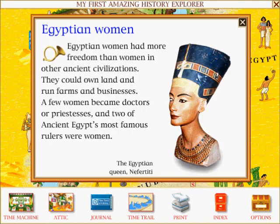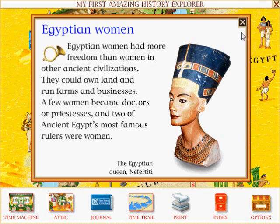Egyptian women had more freedom than women in other ancient civilizations. They could own land and run farms and businesses. A few women became doctors or priestesses. And two of ancient Egypt's most famous rulers were women.